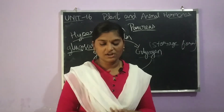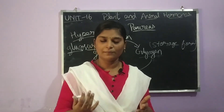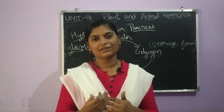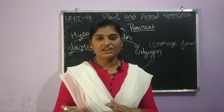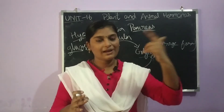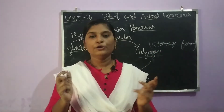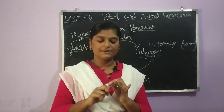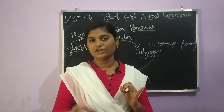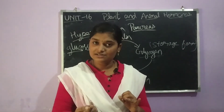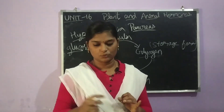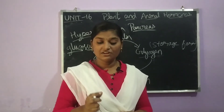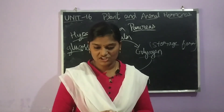The next symptom is frequent urination, called polyuria. Sugar patients will have frequent urine passage — this is polyuria. Next is polydipsia, which means increased thirst. Another symptom is polyphagia, which means increased appetite. These are the characteristic features of diabetes mellitus.